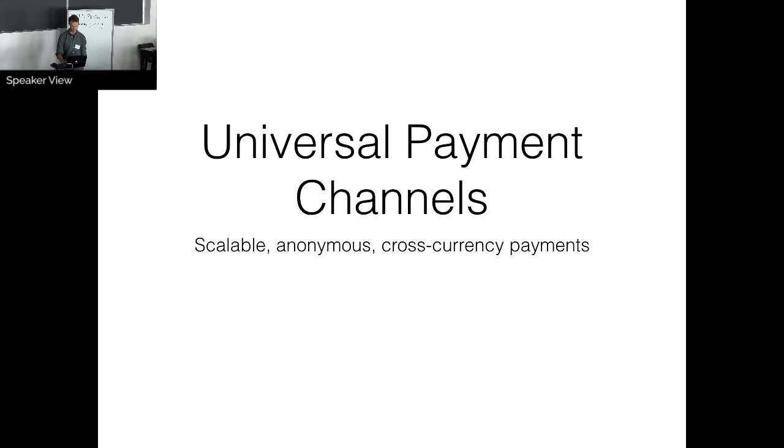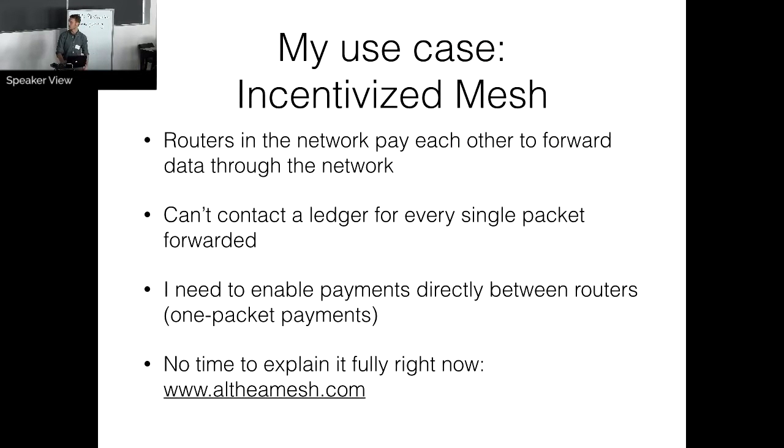But this is the system I'm working on, a little bit different. So this is part of a larger project, Incentivized Mesh. I'm not going to really explain it fully, but I'm trying to build a network where routers pay each other for forwarding packets. So each router is its own ISP. You can put an antenna on your roof and make money, this kind of thing.